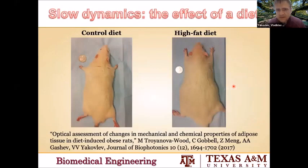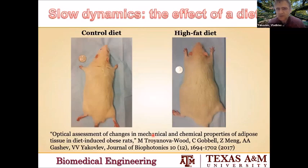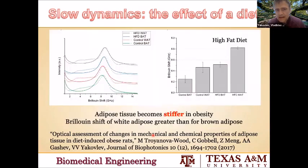We can also look at other interesting applications. For example, obesity is a big problem in the United States. We looked at the effects of obesity and tried to understand how it affects mechanical and chemical properties of tissues, since it is well known that mechanical properties should change when people become obese. We were the first ones to evaluate the effect of fat-rich diets and found that adipose tissue becomes stiffer in obesity, with several important consequences.